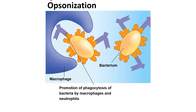In opsonization, the binding of antibodies to the antigen of a pathogen such as bacteria will promote phagocytosis by phagocytes such as macrophages and neutrophils.